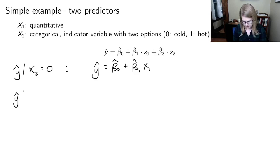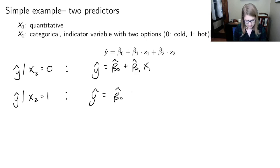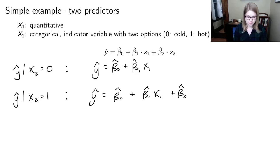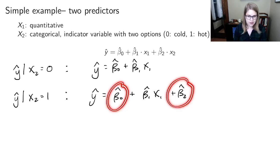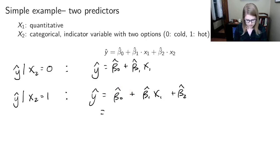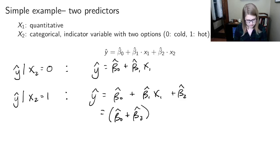And then for y hat when x2 is equal to 1: y hat equals beta 0 hat plus beta 1 hat x1, plus beta 2 hat times 1. Anything times 1 is itself, so I've got beta 2 hat. Now I've got two terms without x's, and I can combine those together to make a bigger intercept: beta 0 hat plus beta 2 hat, in parentheses, plus beta 1 hat x1.